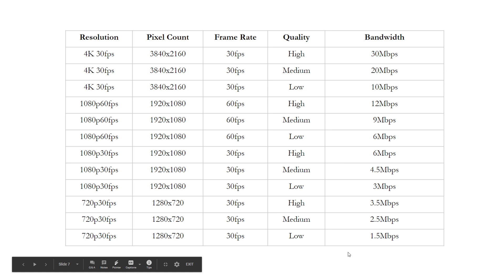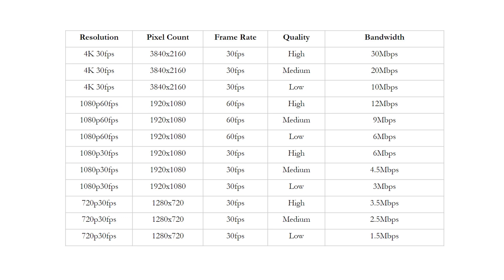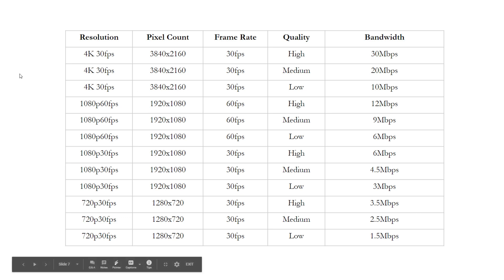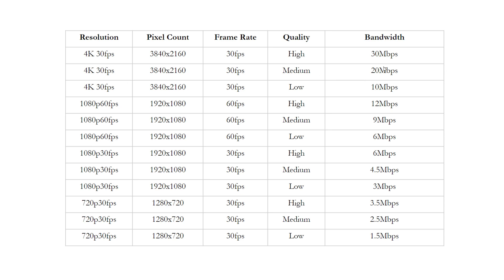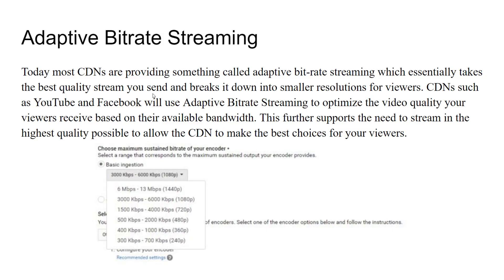My internet connection here is about 25 megabits per second of upload speed, so I can't do a 4K 30 high quality stream, and I probably shouldn't even try 4K 30 medium quality. But I could definitely do a low quality 4K stream at 10 megabits per second, and I could do a high quality 1080p 60fps setup. Those are the things you think about when choosing your bit rate for live streaming.